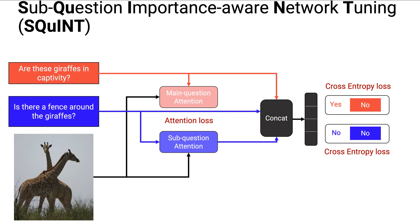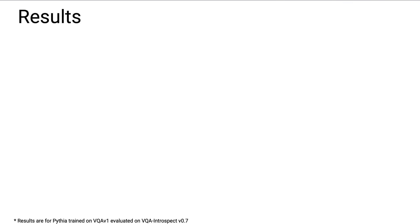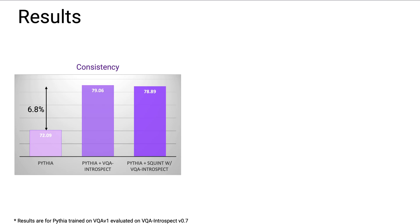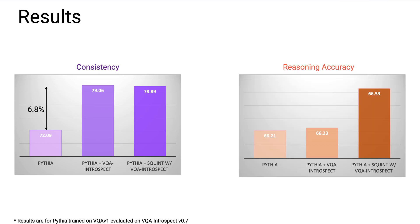In order to improve the consistency and the reasoning ability of models, we introduce an approach called Squint. We add a term to the loss function to encourage the models to look at the same regions when answering the main question and the sub-question. We find that Squint improves consistency by 6.8% while marginally improving the reasoning performance, defined as the accuracy on the reasoning questions.